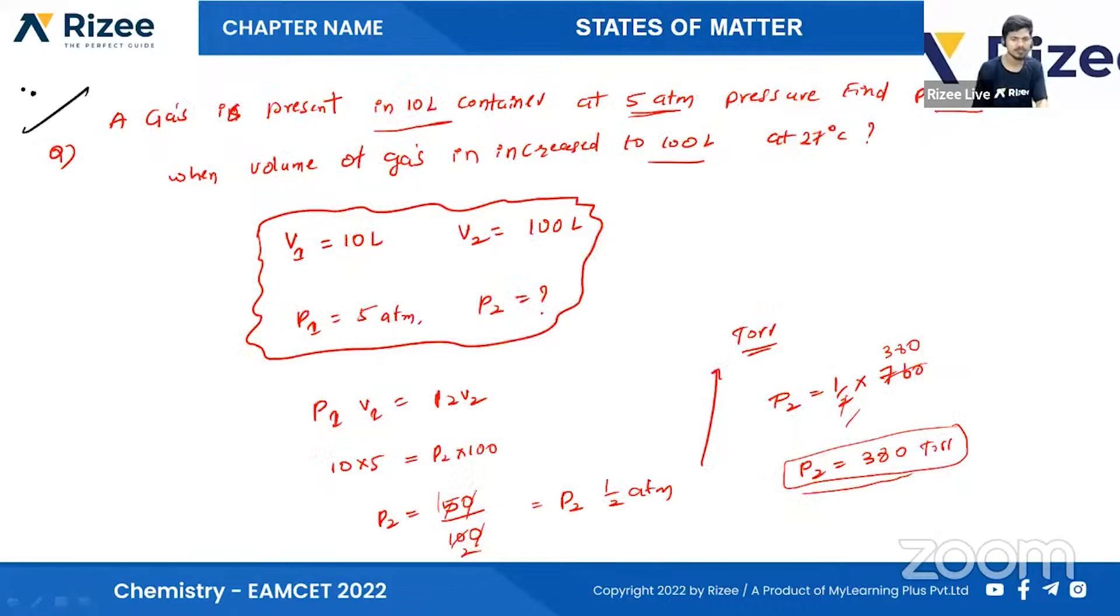See this question. A gas is present in a 10-liter container. The gas is under a 10-liter container. Find the pressure in Torr when the volume of gas is increased to 100 liters at 27 degrees centigrade.